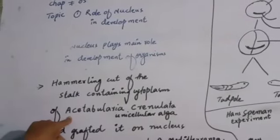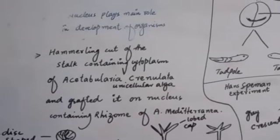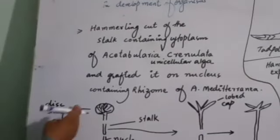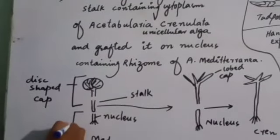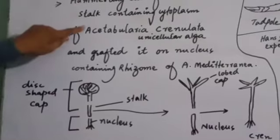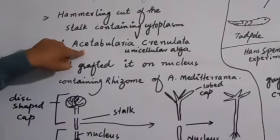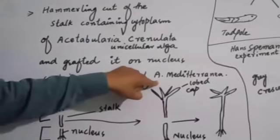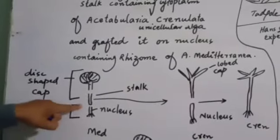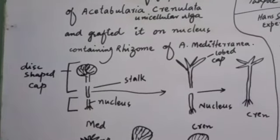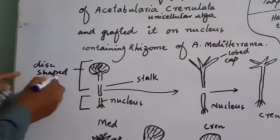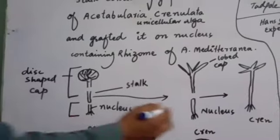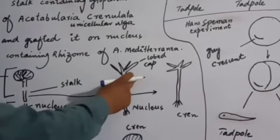Acetabularia is a unicellular alga that has two parts: one is Cytoplasm and the other is the stalk. There are two species of Acetabularia. You can see here — Acetabularia mediterranea has a disc-shaped cap, and Acetabularia crenulata has a lobed cap.